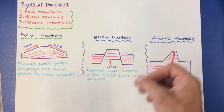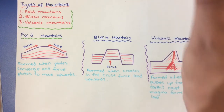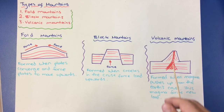Block mountains are formed when cracks in the crust force the land upwards — force beneath pushing up, and the cracks cause the mountain to move upwards. Volcanic mountains are formed when magma pushes up from the earth's crust, forming new land, a bit like those diverging plates. The land is pulled apart and the magma is allowed to rise to the top, forming new land.